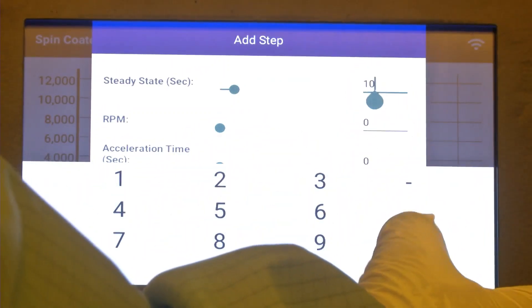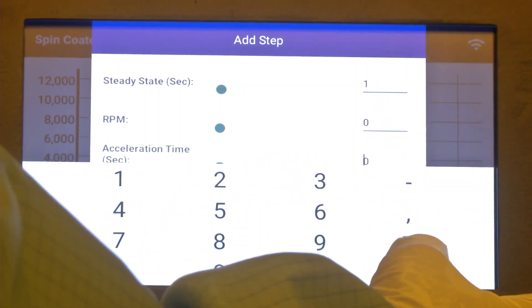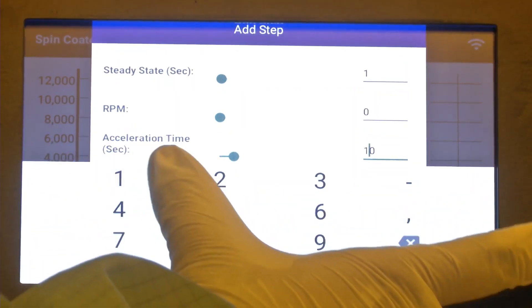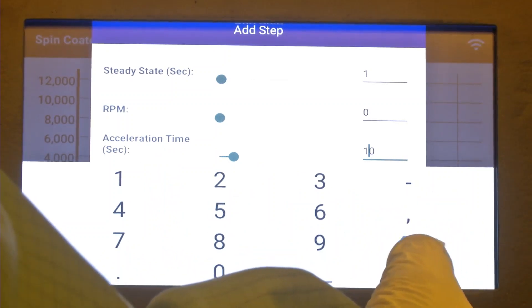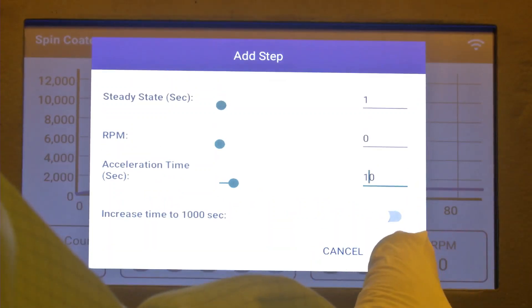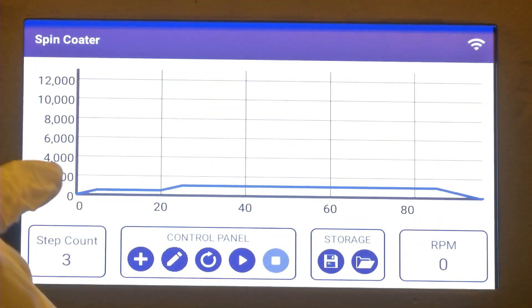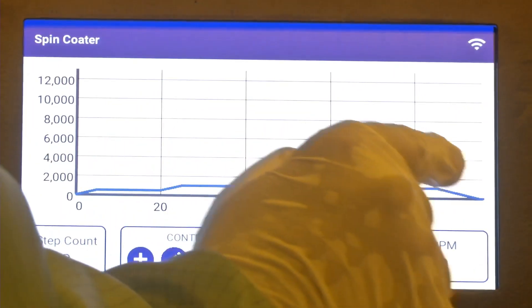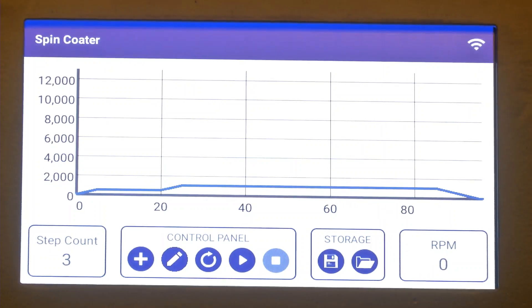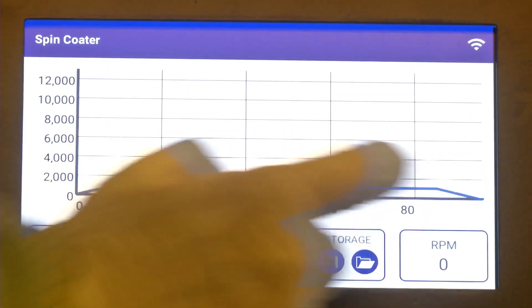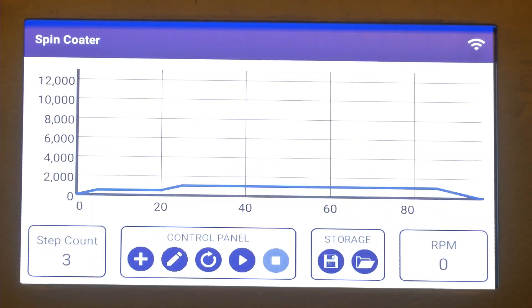The RPM that we are referring to depends on the spin coater. In this case, even if we give one step of steady state, ramp down will function automatically. As you can see in the graph plotted, the Y-axis is the RPM and the X-axis is the time in seconds. We can see there is a ramp up speed, then it stays there for some time, then again there is a second ramp up to 1000 RPM, it stays there for 60 seconds, and then there is a ramp down. We have now set the spin coating parameters.